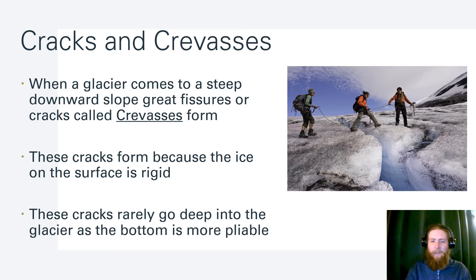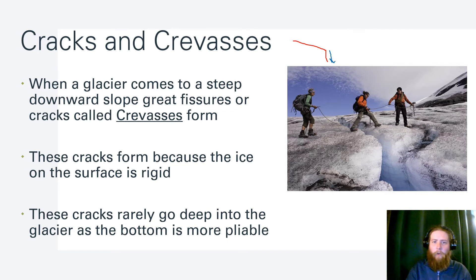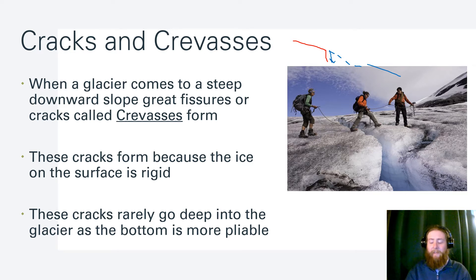When a glacier comes to a very steep downhill slope, we can get these big cracks called crevasses. The ice on the surface is rigid and forms cracked sections to navigate steeper slopes. These cracks don't go as deep into the glacier because the bottom is more pliable — it has some melted bits, sand, and gravel, allowing it to slip. The chunks at the top are really rigid, which is why they break to form these long cracks.